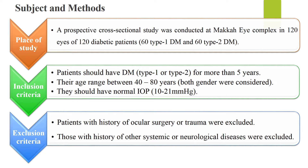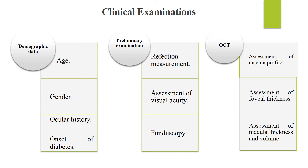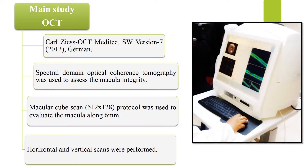Patients with history of ocular surgery or trauma were excluded, as well as those with history of other systemic diseases like hypertension, or patients with neurological diseases, because neurological diseases usually affect retinal changes. The clinical examinations included demographic data such as age and gender, ocular history, and onset of diabetes, beside primary examinations such as refraction measurement, assessment of visual acuity, and fundoscopy. Optical coherence tomography was used to assess the macular profile, foveal thickness, macular thickness, and macular volume. The main study procedure was optical coherence tomography.